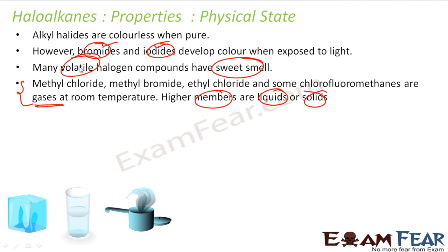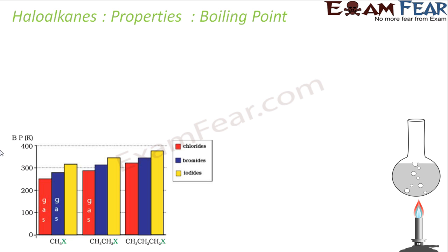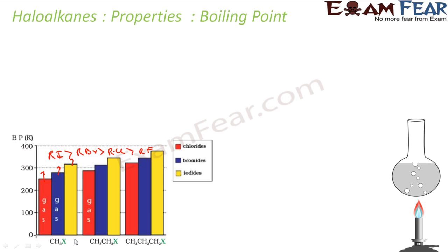For boiling points, typically RI has a higher boiling point than RBr, then RCl, then RF — because fluorine has a small molecular size, chlorine is bigger, bromine bigger still, and iodine the largest. As size and molecular mass increase, the van der Waals force of attraction increases. So for CH3X: CH3I has the maximum boiling point, followed by CH3Br, then CH3Cl, because CH3I has the biggest size, mass, and van der Waals attraction.